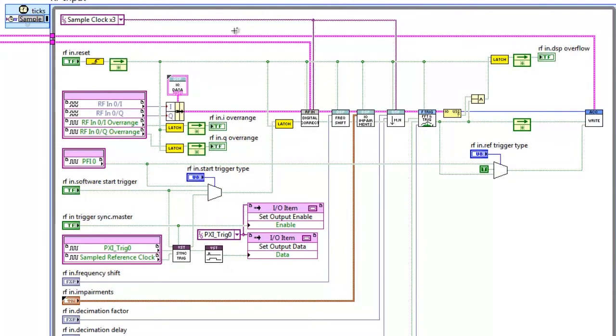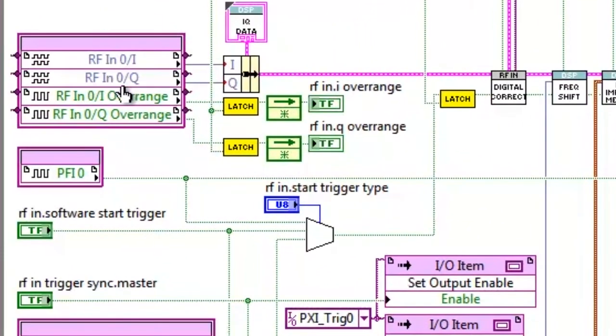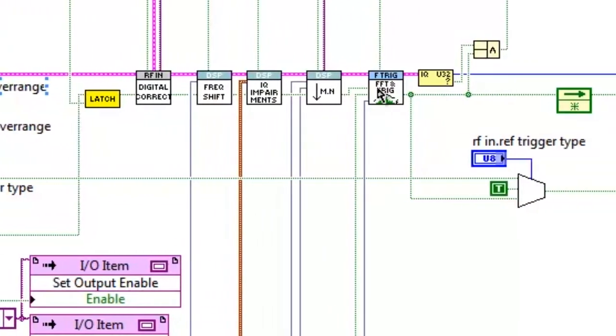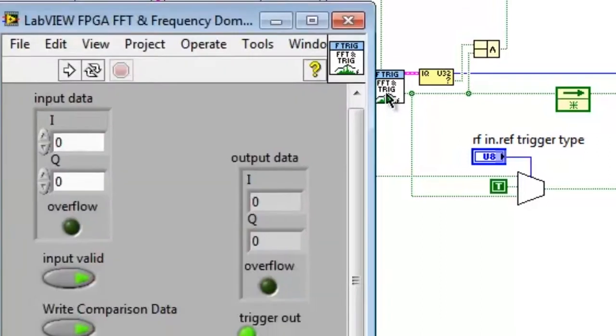Now let's switch over to the LabVIEW FPGA VI to see what this looks like. Here we can see the acquisition loop that is part of the default personality of the vector signal transceiver. Here on the left, we can see the raw RF INQ data coming in, going through some digital signal processing. And here on the right, we can see our frequency domain trigger VI. Let's dig down and see what this looks like.